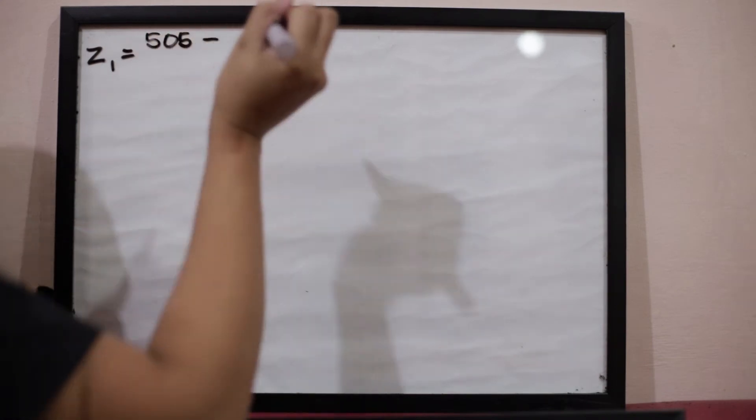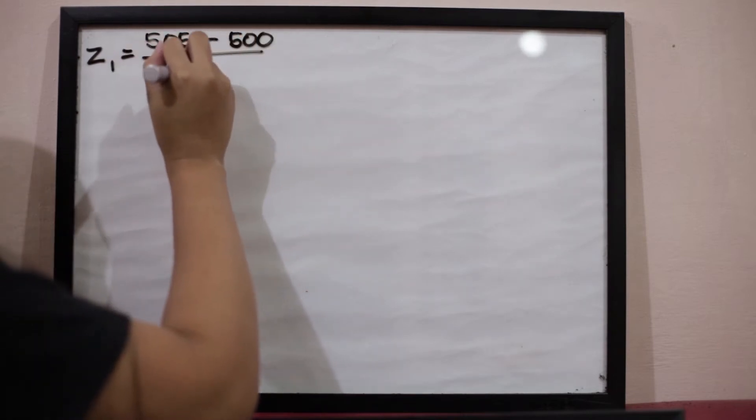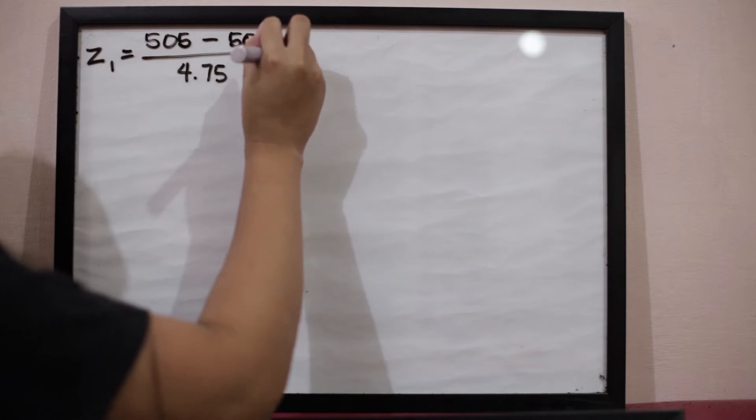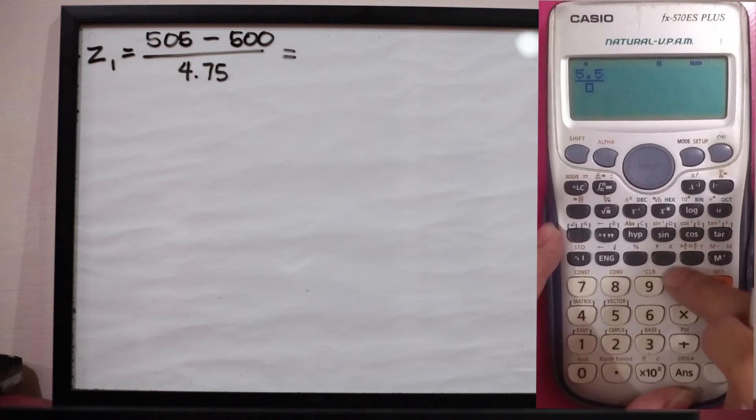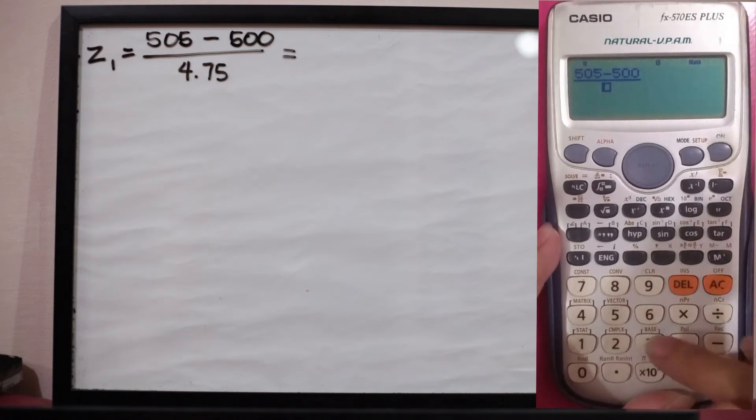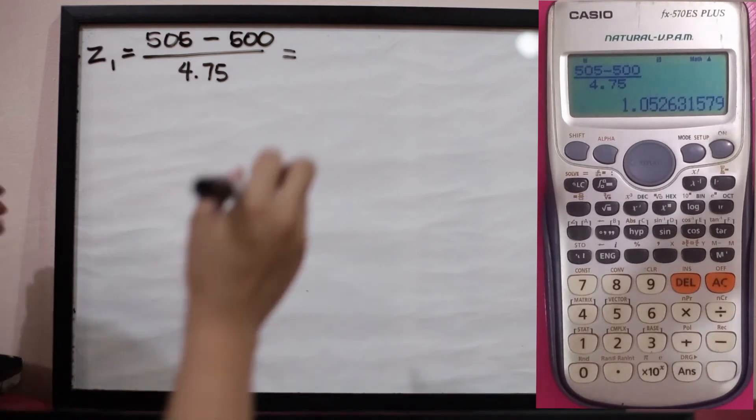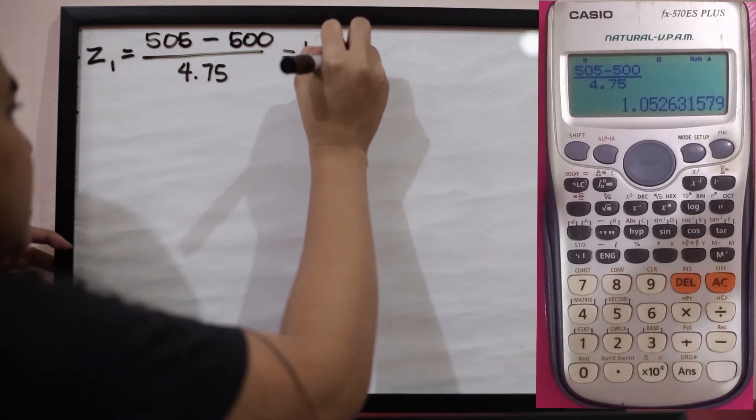For 505, we will have z₁ equals raw score 505 minus 500, the mean, all over 4.75 since this is our standard deviation. Using the calculator, 505 minus 500 all over 4.75. The answer is 1.05. We have to use two decimal places only.